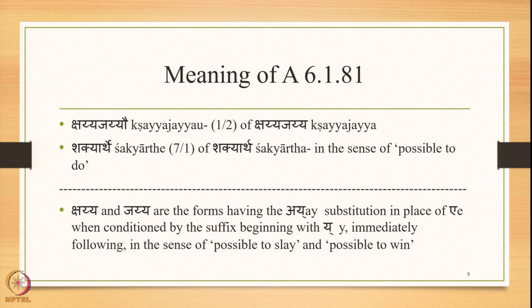The overall meaning of the Sutra is: Kshaya and Jaya are the forms having the Ay substitution in place of E, conditioned by the suffix beginning with Y immediately following, in the sense of 'possible to slay or destroy' and 'possible to win.'